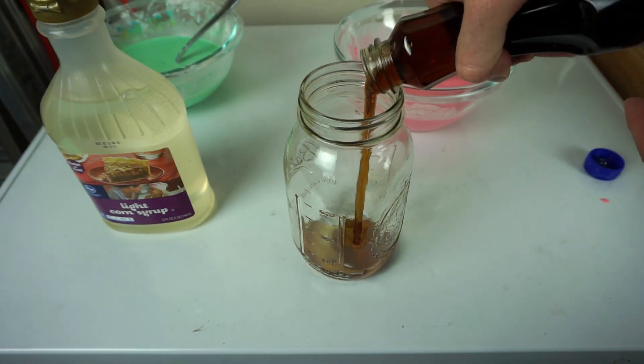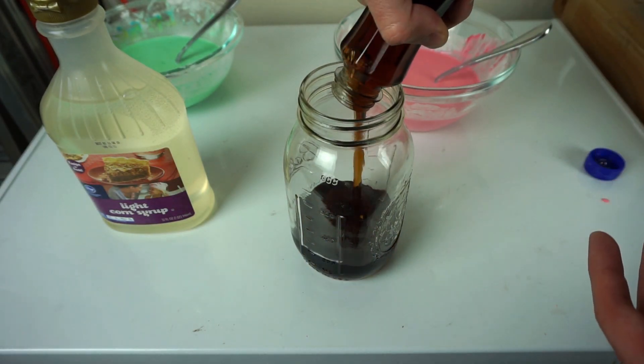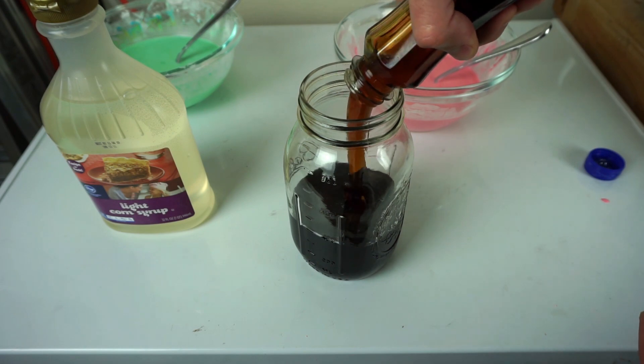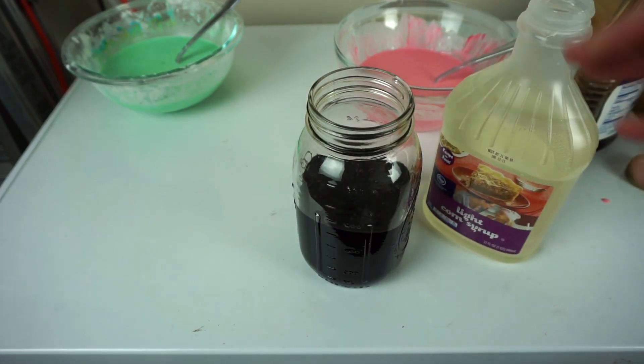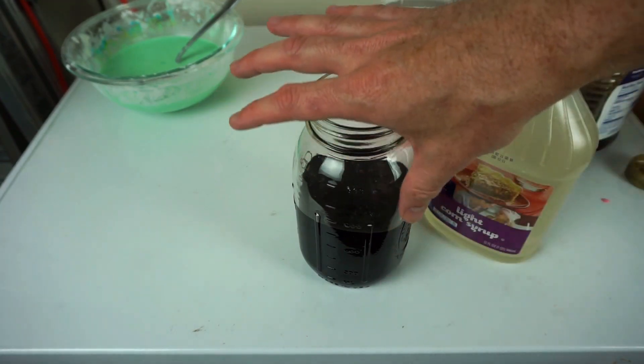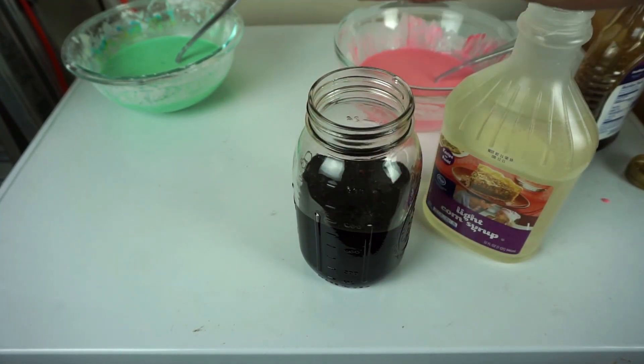Let's have our dark syrup on the bottom. Now these are going to mix a little bit just from pouring into each other, but hopefully they'll stay not mixed enough so that we can see the mixing happening in the paint shaker.